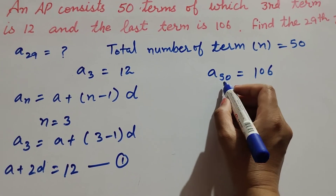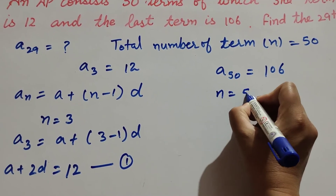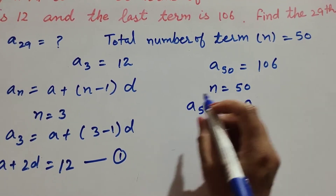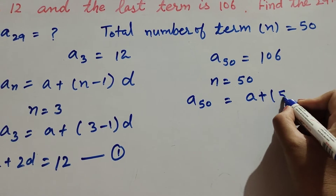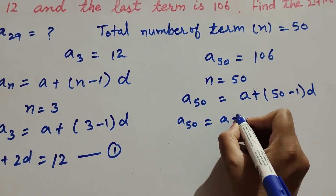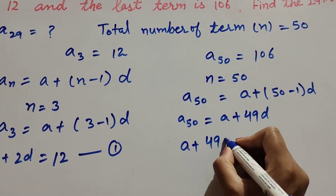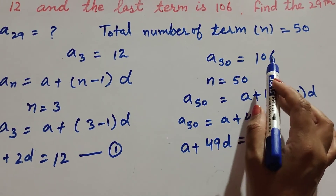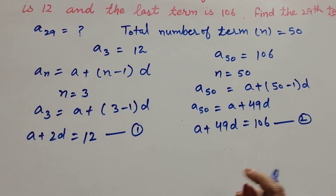Now for A50, the 50th term of the AP, it is equal to 106. Here N is equal to 50. So A50 equals A plus (N minus 1)D, which gives A plus 49D. And A plus 49D equals A50, which equals 106. So A plus 49D equals 106. We mark this as equation number 2.